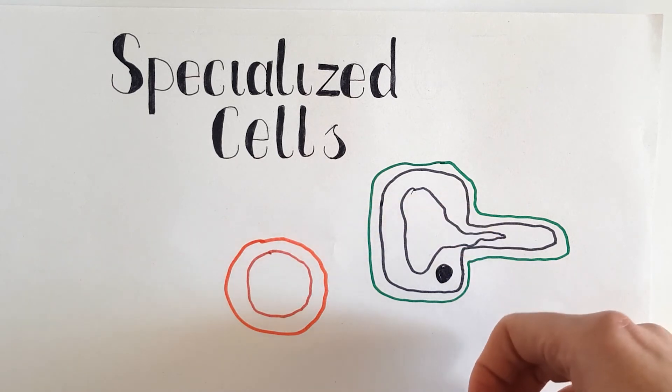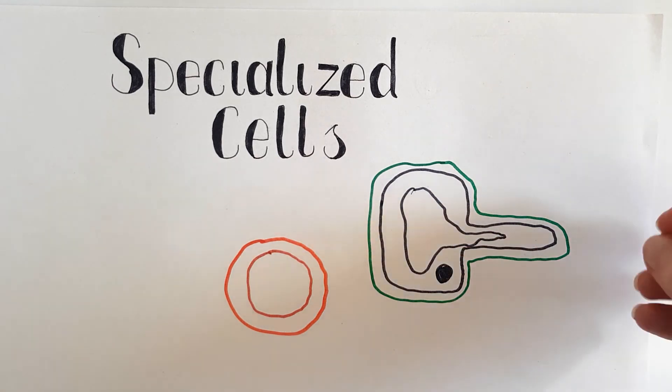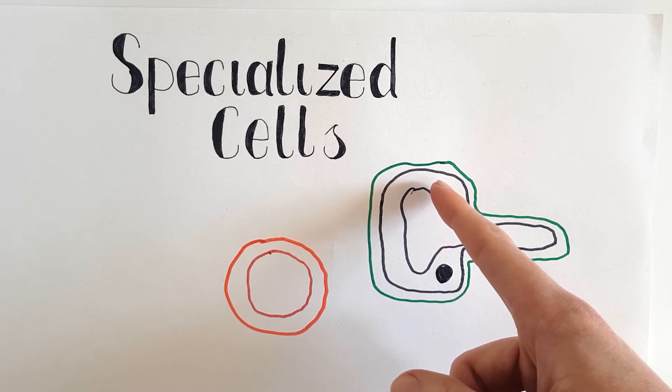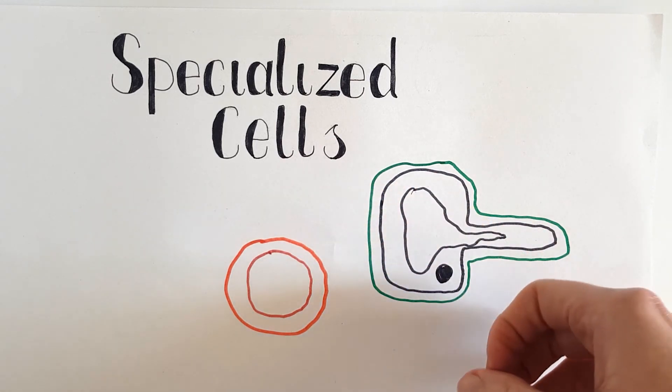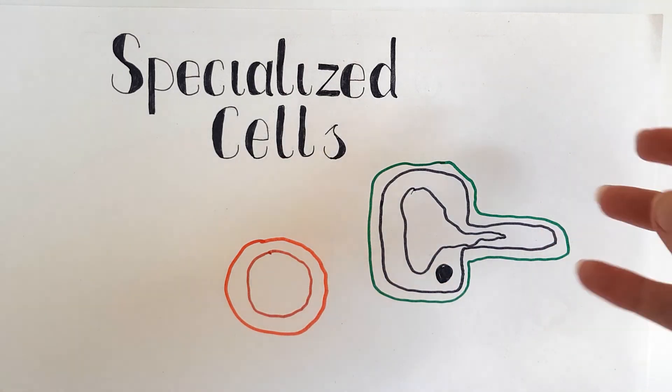What it does need to do, as it's part of a root, is taking water. So most of its shape is taken up by this big vacuole in the middle. Because its main job is taking water so it can go up through the stem to the rest of the plant.